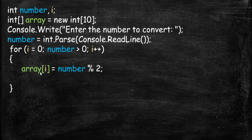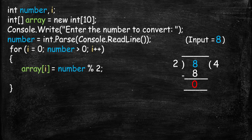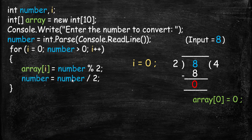We use our array with the i variable as index — so when i is 0, our array index is 0. We store the remainder: number modulo 2. For example, if the user entered 8, it will divide 8 by 2, giving remainder 0. So when the loop runs the first time, i is 0, and array index 0 stores 0. This line gets the remainder and stores it in the array.